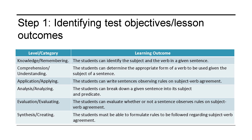Step 1: Identifying test objectives or lesson outcomes. An objective test, if it is to be comprehensive, must cover the various levels of Bloom's taxonomy. Each objective consists of a statement of what is to be achieved, preferably by the students. For example, if we want to construct a test on the topic subject-verb agreement in English for grade 5 pupils, the following are typical objectives.